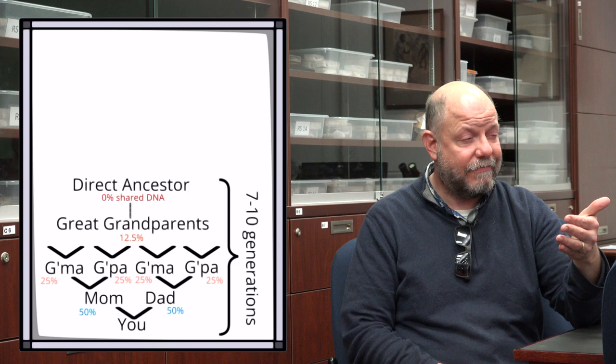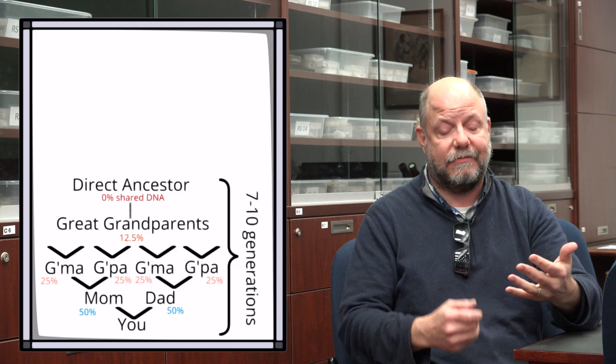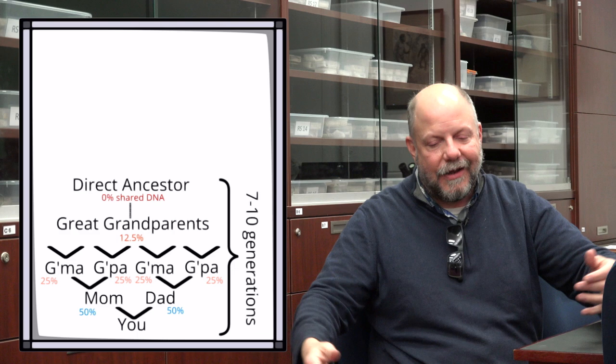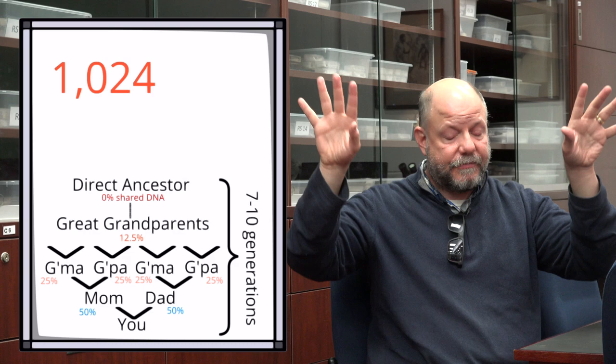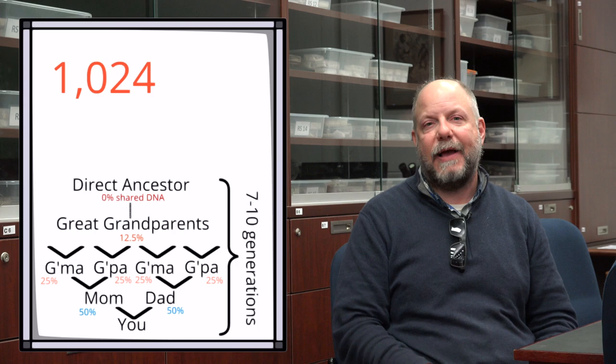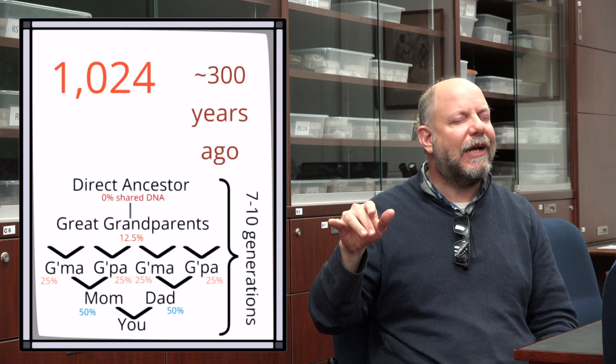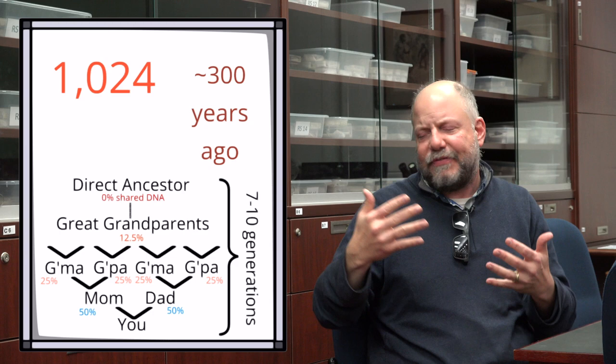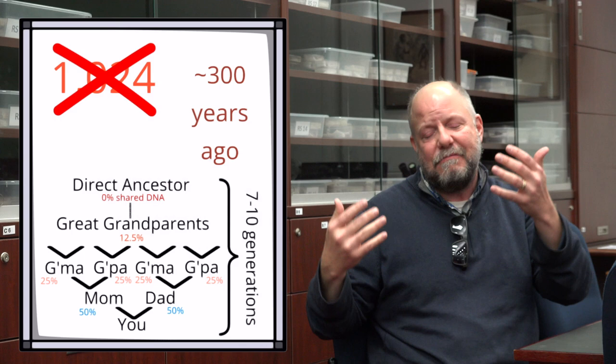And the number of ancestors potentially that you have is doubling every time. Two parents, four grandparents, eight great-grandparents, 16 great-greats. Doubles every time. You go back 10 generations and you have 1,024 lines. Now many of us come from communities where 10 generations back, you're talking about 300 years ago. There were cousins that were getting married and are in my family tree. If not first cousins, second cousins, third cousins. I don't have 1,024 ancestors. I have 920, right? Because they start to intertwine.